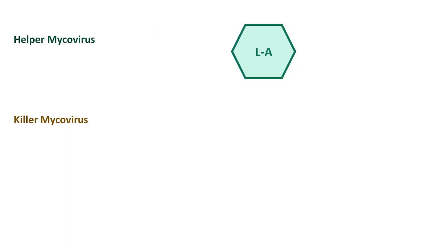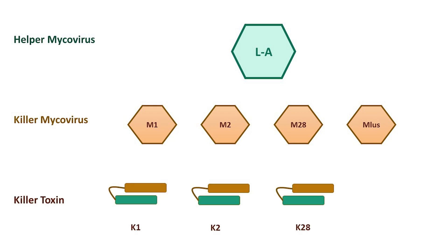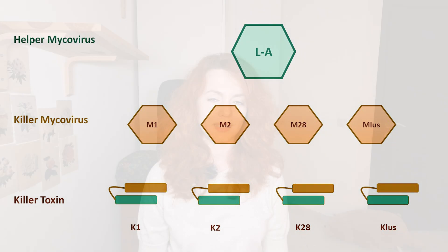Four types of killer mycoviruses have been described so far: M1, M2, M28, and M-Las, bearing genes for toxins K1, K2, K28, and K-Las respectively.